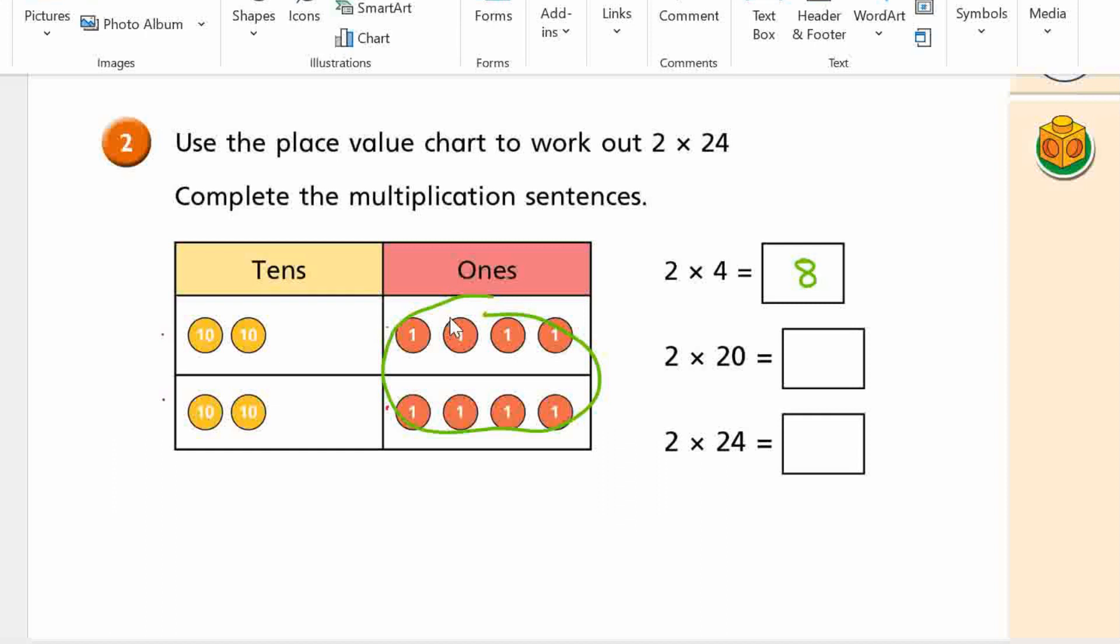What's 2 times 20? 40. So what's 2 times 24? 48, because you have to add these two together to equal this, yeah?